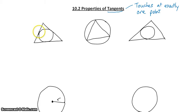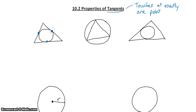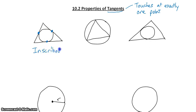If we look at our first problem, we have a triangle and each side of the triangle is tangent to the circle — it touches the circle at exactly one point. The circle is inside the triangle, so we can say the circle is inscribed in the triangle.